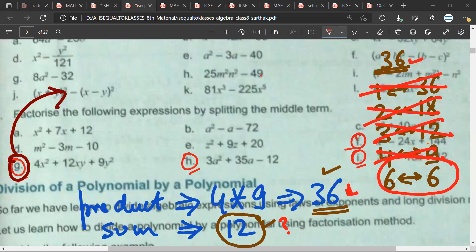So the only pair which satisfies both the conditions: the product of 6 into 6 is 36, that is satisfied. Sum of the two numbers, 6 plus 6 is 12, again this is satisfied. Mr. Sartak, any doubt till here? No sir.